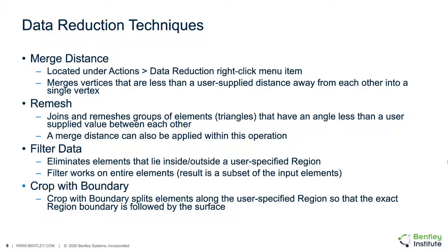Many times a mesh object might be received in the software with too many points to be manageable. Therefore, the Merge Distance, Remesh, Filter Data, and Crop-Width Boundary functions allow the number of node points in a surface to be greatly reduced. The Merge Distance function merges vertices that are less than a user-supplied distance away from each other into a single vertex. The Remesh option develops a different mesh based on the original mesh as well as meshing constraints. The Filter Data option may be used to eliminate elements that lie inside or outside a user-specified region. The Crop-Width Boundary function splits elements along user-specified regions so that the exact region boundary is followed by the surface.